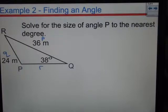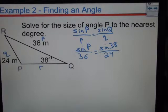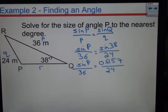Just to refresh our labeling. So we get sine p over p equals sine q over q. We quickly fill in what we know. Sine p over 36 equals sine 38 over 24. Sine p over 36 equals 0.6157 over 24.